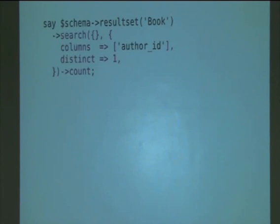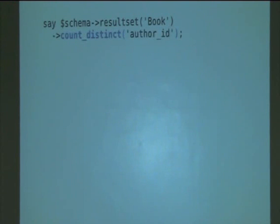Now, of course, this is quite a lot of code for something that's relatively simple, and it has, in particular, the annoying feature that the count bit, which is really quite important, has been hidden at the end of this relatively long method call. So you think, well, maybe I should write a method to simplify that. So you'd like to be able to say something like, dollar schema arrow result set book arrow count distinct author ID. How many distinct author IDs are there?